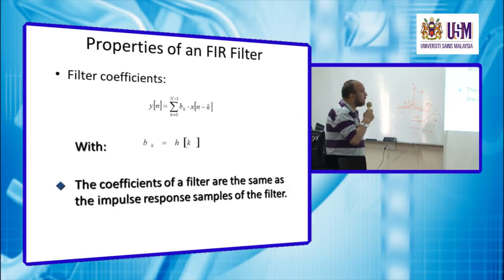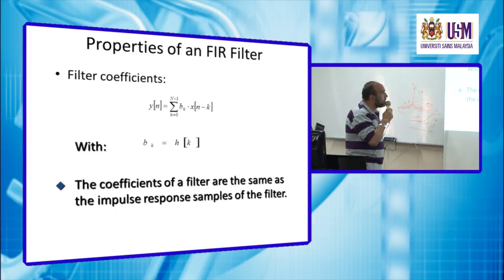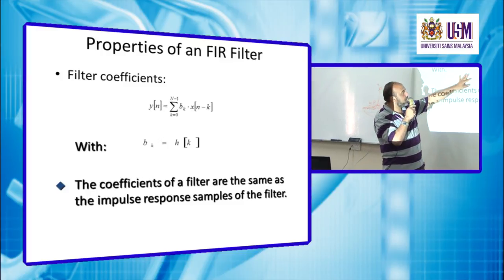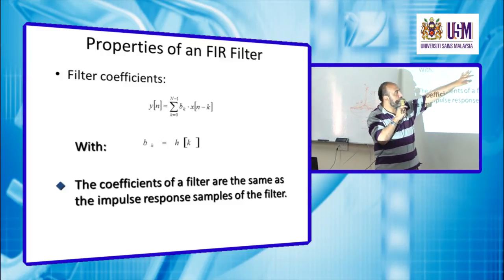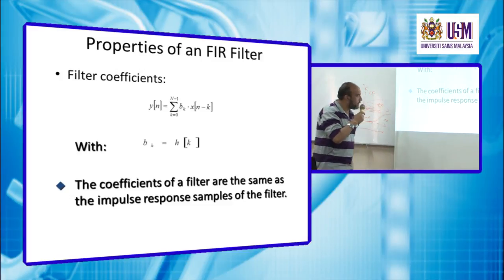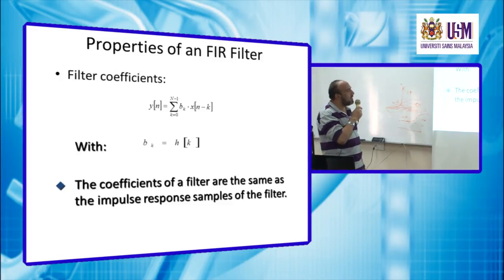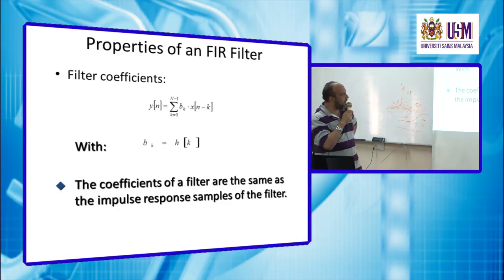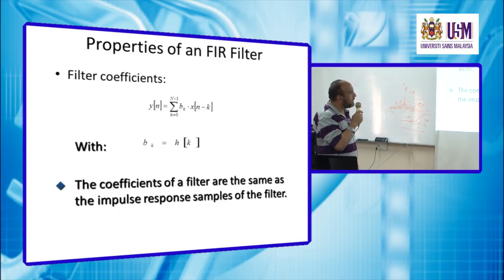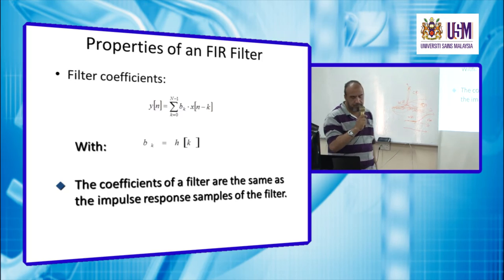In summary, bₖ = h(k), which means the coefficients of an FIR filter are the same as the impulse response samples of the filter. The impulse response series represents the filter's coefficients.